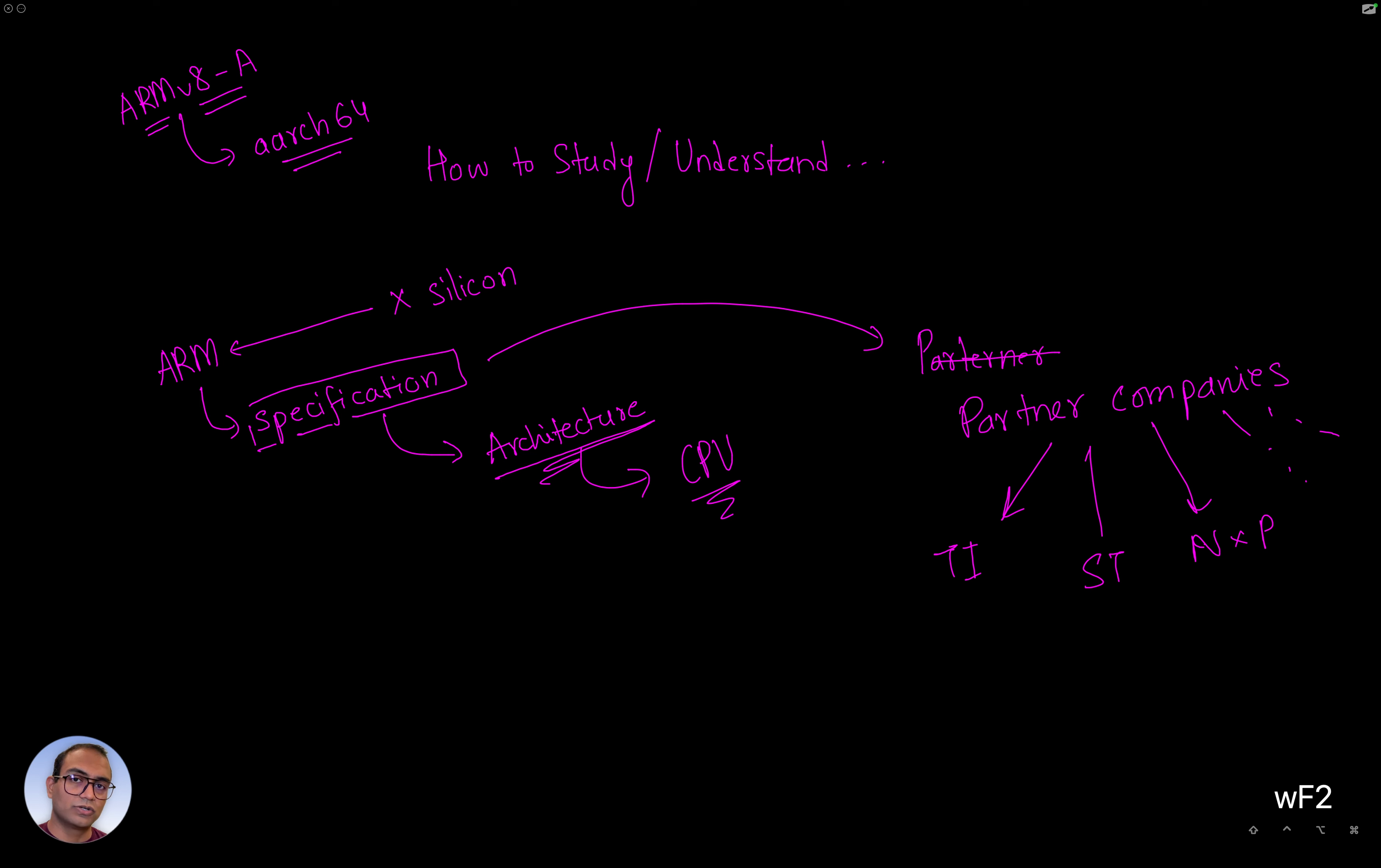Long story short, ARM is a company that makes architecture, just the documents. They take royalty from whoever wants their architecture and converts it into a chip. That's the business model.